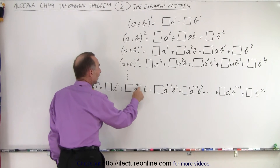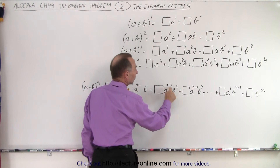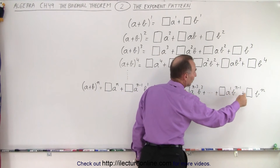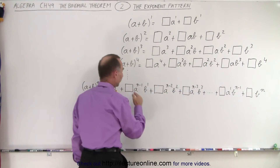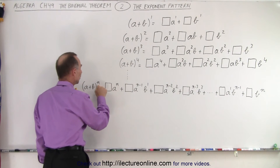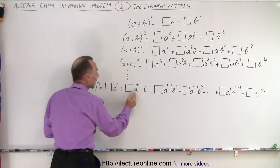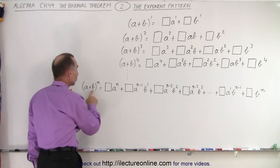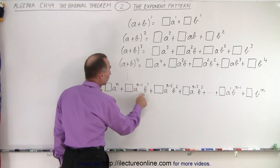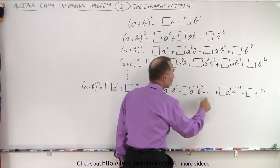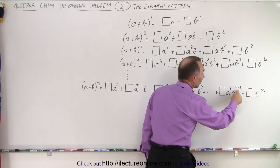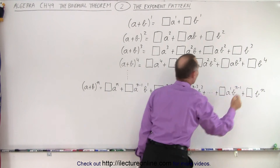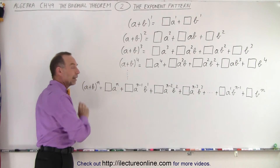The second term has a exponent that is 1 less than n. The third term is 2 less, the fourth term is 3 less, and so forth. It keeps decreasing until we get a to the first power, then a to the zero. So the first term starts with the same exponent as the binomial expansion and decreases by 1 all the way to a to the zero. For the b term, we start at b to the zero, then b to the first, b to the second, b to the third, and so forth — eventually b to the n minus 1, and the very last term is b to the n.